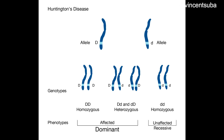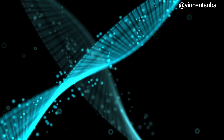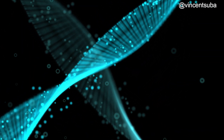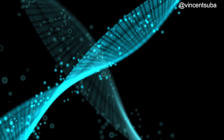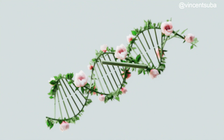For a dominant trait to be expressed, only one copy of that allele is required, while for a recessive gene to be expressed, two copies of the allele are required. Therefore, increasing generations of inbreeding will increase the homozygosity of recessive traits that might be lethal.